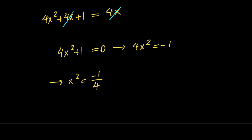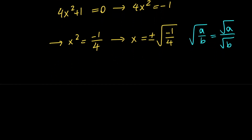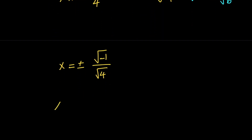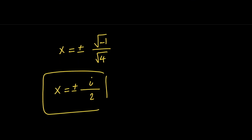This means that 4x squared equals negative 1, and that means x squared equals negative 1 fourth. Now, in order to solve for x, we need to take the square root of both sides. So we will have x equals positive or negative the square root of negative 1 over 4. Notice that the square root of a divided by b can be expressed as the square root of a divided by the square root of b. Therefore, x is equal to positive or negative the square root of negative 1 divided by the square root of 4. The square root of negative 1 is i and the square root of 4 is 2, so x is equal to positive or negative i over 2. So this brings us to the end of the first method.